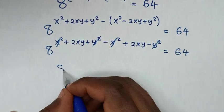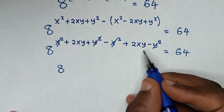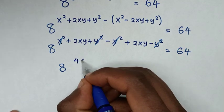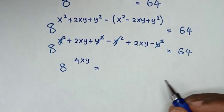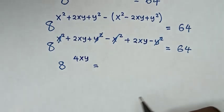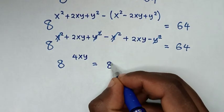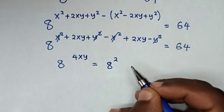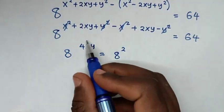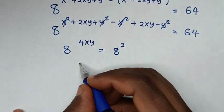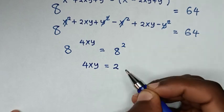Then it will be 8 power of 2xy plus 2xy, which is 4xy, is equal to 64. To have the same base of 8, 64 is the same as 8². Now in here we have the same base, so we will compare these powers. So it will be 4xy is equal to 2.